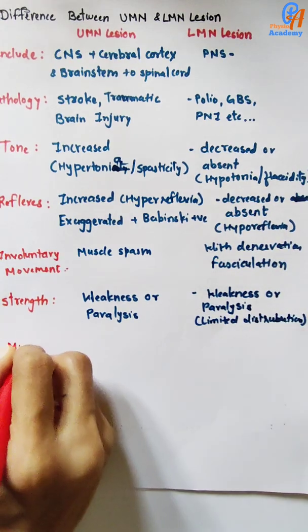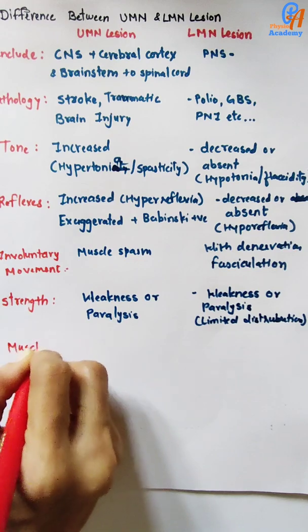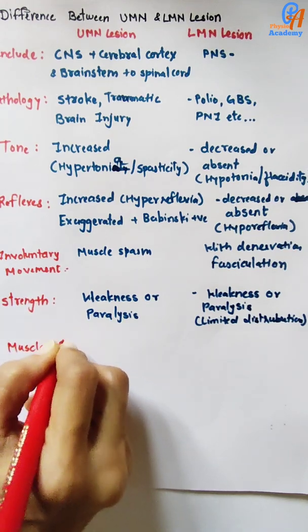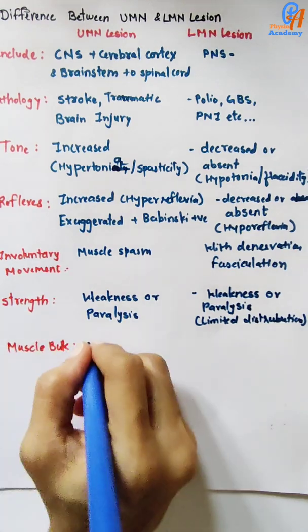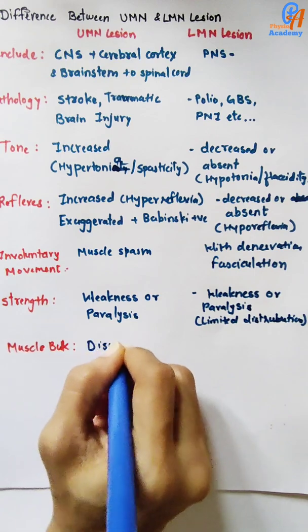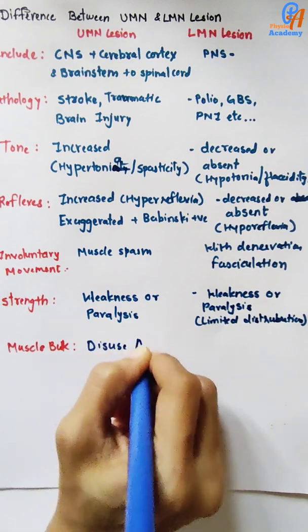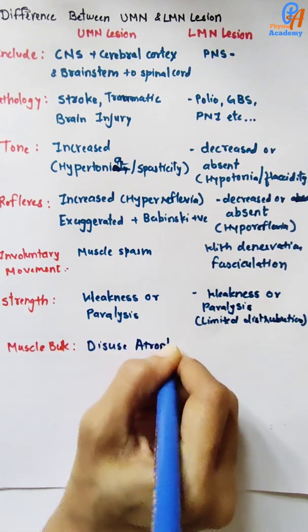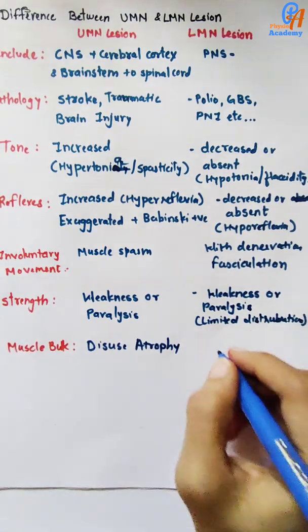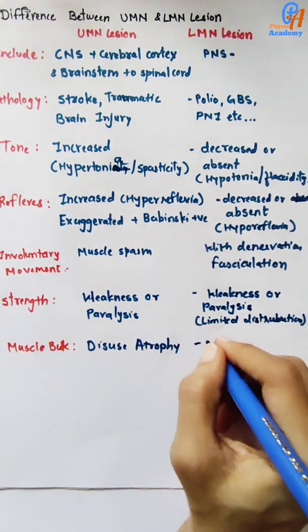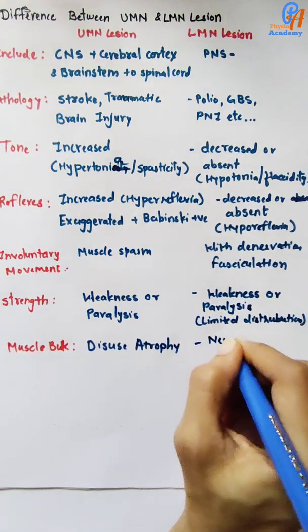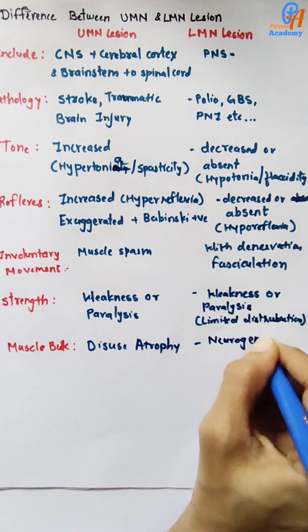Regarding muscle bulk: in upper motor neuron lesion, disuse atrophy is seen. In lower motor neuron lesion, there is neurogenic atrophy.